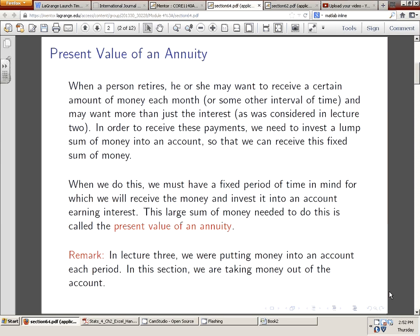Now when we do this we have to have a fixed period of time in mind because what we know is that at the end of this window of time, the amount in the bank or the amount in the investment will become zero dollars. So what we need to know early on is the large sum of money needed to receive money in this manner. This is called the present value of an annuity.